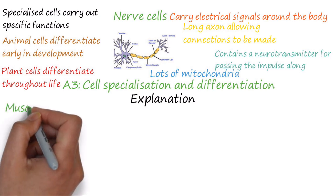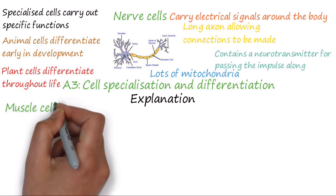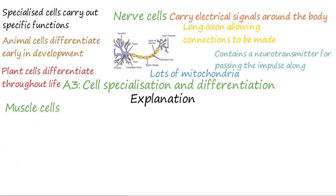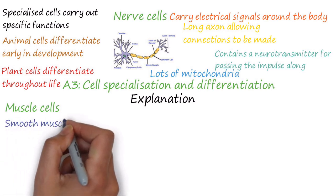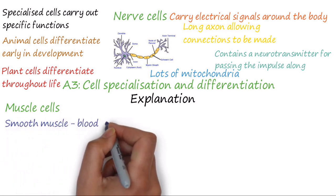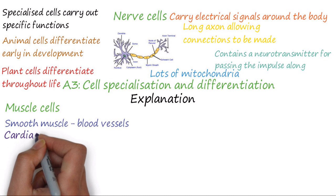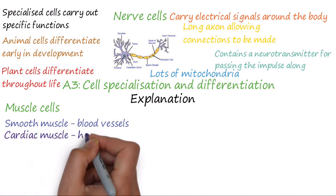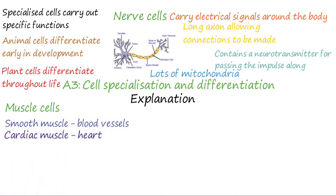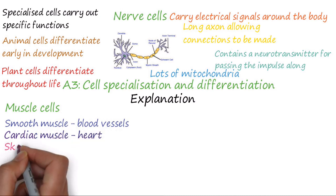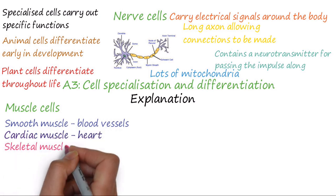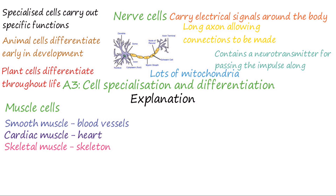Next, muscle cells. There are three types of muscle cells found in the body: smooth muscle, which is found in the blood vessels and the intestines, to name a few places; cardiac muscle, which is found in the heart; and skeletal muscle, which is attached to the bones of the skeleton.